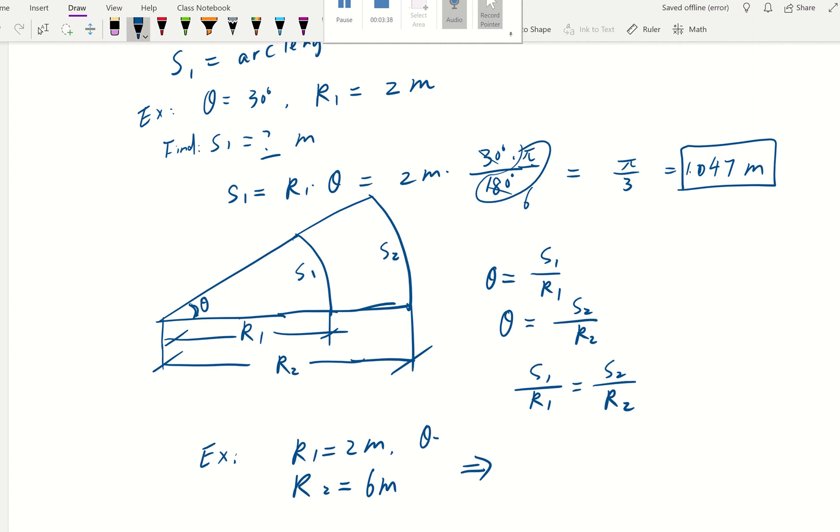And if you figured out earlier, s1 from the previous problem—the angle theta is 30 degrees—so this is essentially the same problem as earlier. Our s1 is going to be 1.047 meters.